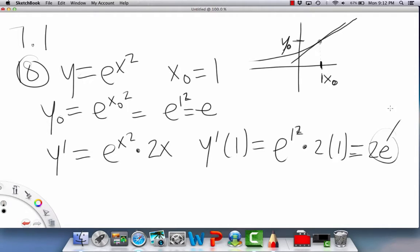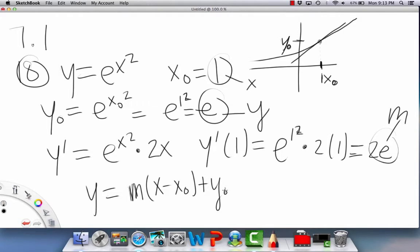This is like m, right, at that point. And then this is our y value, and this is our x value. Okay, so if we put it all together, then we'll get y equals, I'll just write out the general formula. So m times x minus x₀ plus y₀.